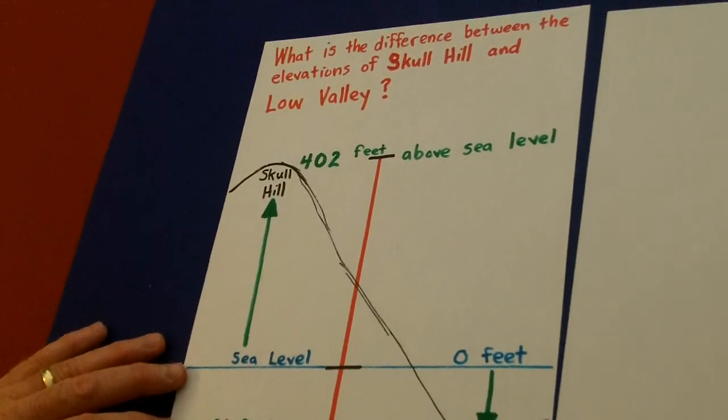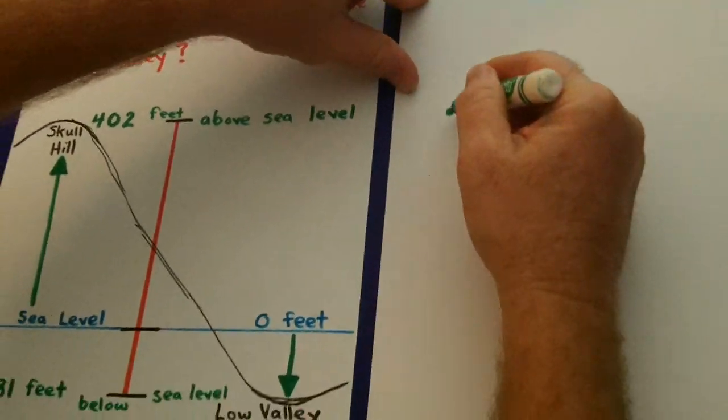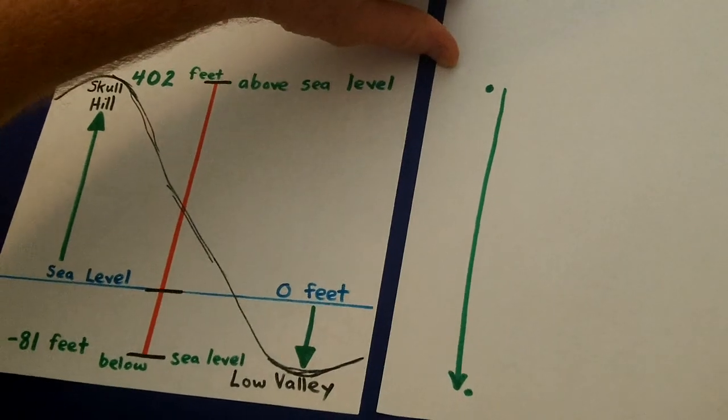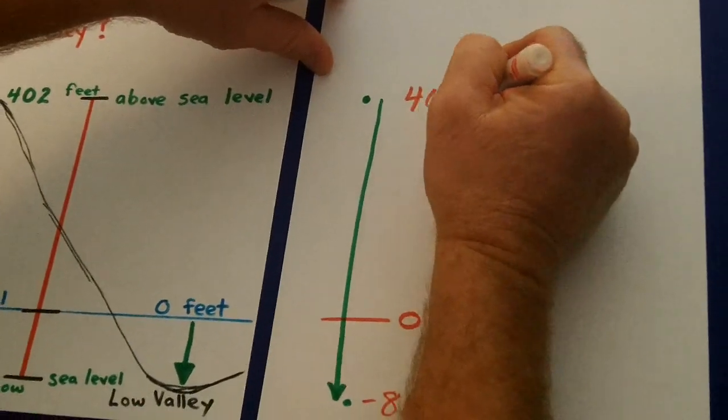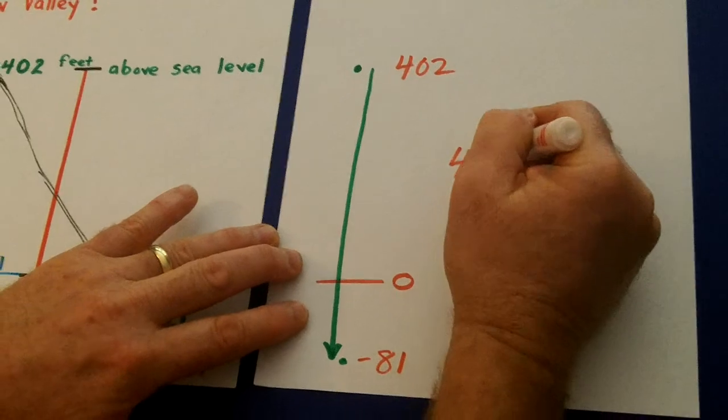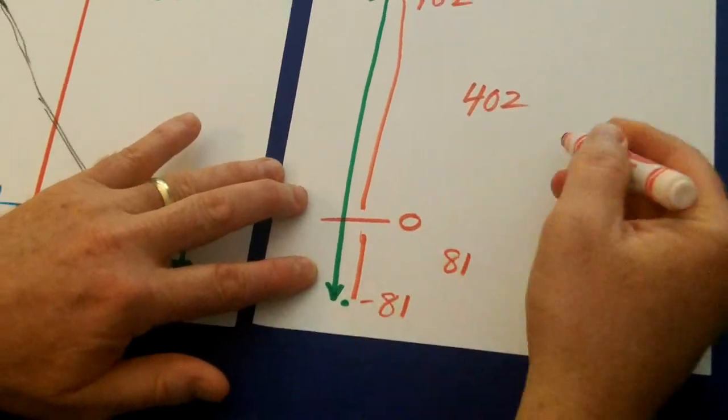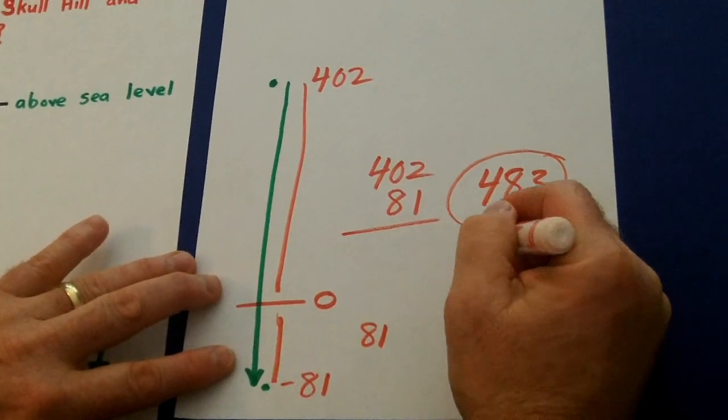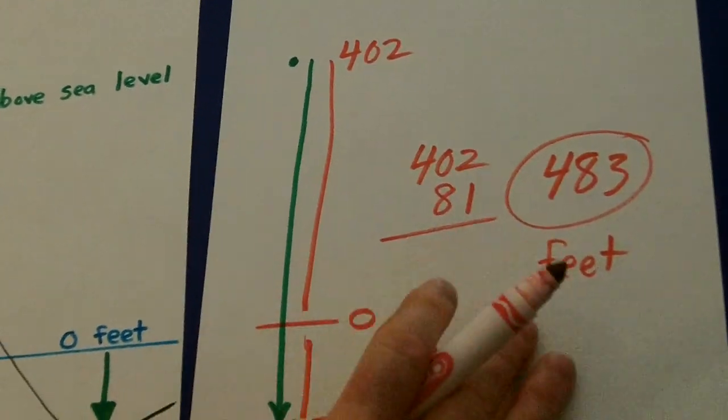Now what the tests ask is this. If you go from the top of Skull Hill, how far in elevation will you go down to the bottom of Low Valley? Well, you have to pass 0 here to get to negative 81. There's 402 above 0, there's 81 below 0. So you're going 402 then 81. You add those two together. That's 483 feet in elevation.